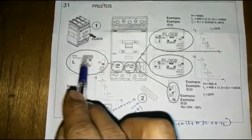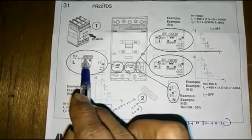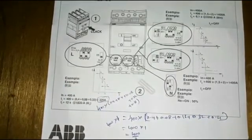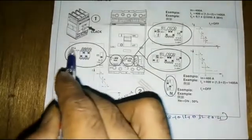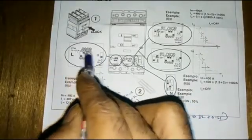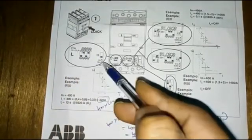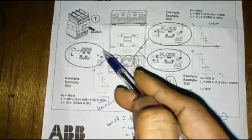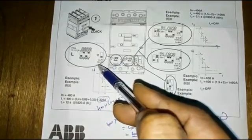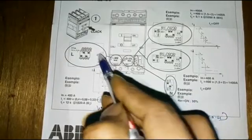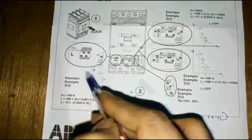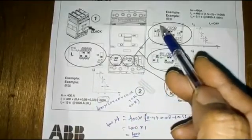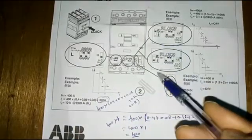When all switches are on top, you are using the MCCB as a full 400 ampere. The timing can also be set: T1 has three seconds and 12 seconds. Switch in top means three seconds; switch in down means 12 seconds. When the current goes beyond 400 ampere, it is going to trip.